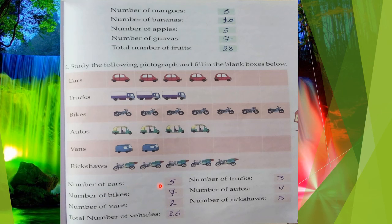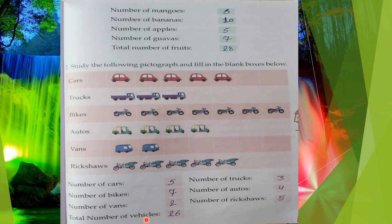Number of cars: 5. Number of bikes: 7. Number of trucks: 3. And the total number of vehicles — overall, how many vehicles are there? 26. Total number of vehicles is 26.